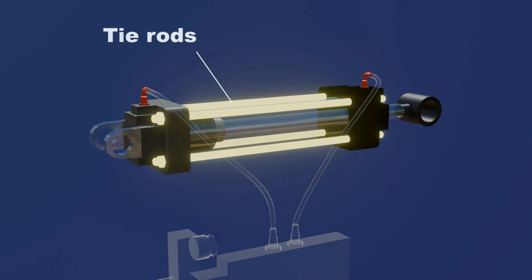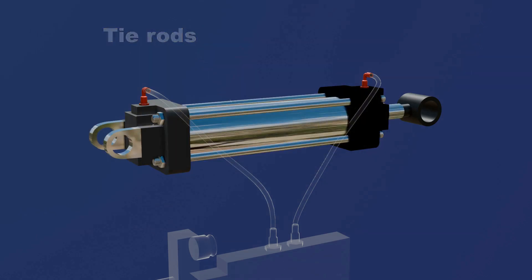These are the tie rods. Tie rods are used to hold the cylinder heads together, ensuring that cylinder components are protected under pressure.